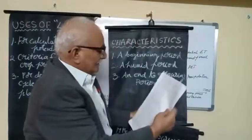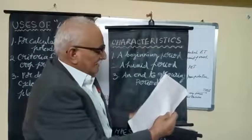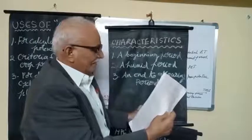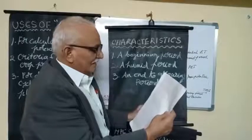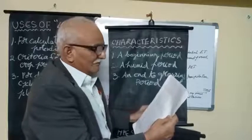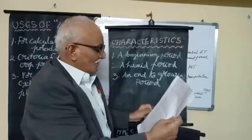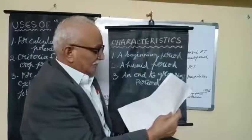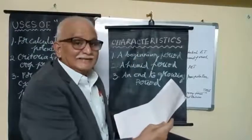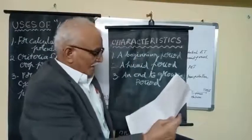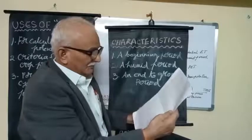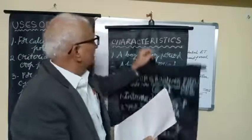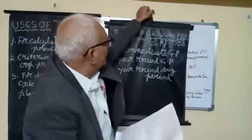The beginning of the growing period coincides with the start of the normal rainy season and is taken as the date when precipitation equals half of the PET. The humidity period is when precipitation exceeds the full PET. The end of the growing period is when the precipitation curve crosses back down to half of the PET.